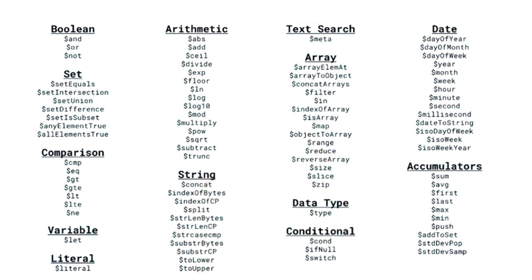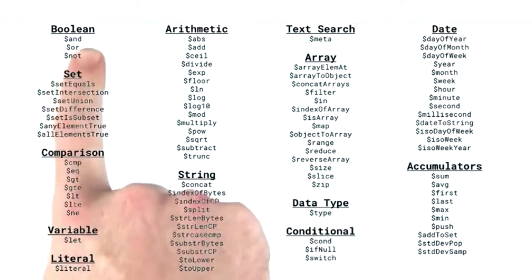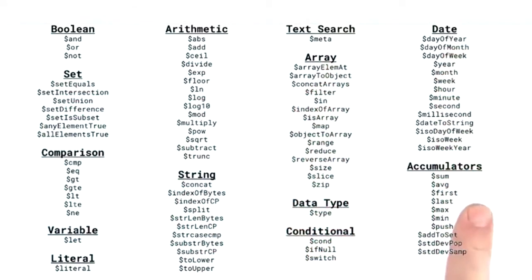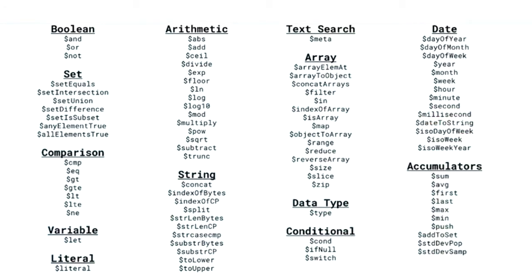Here are some expressions available to us: we can use Boolean, set, comparison, variable, literal, arithmetic, string, text search, array, data type, conditional, date, and accumulator expressions. There are a lot of expressions available, and while the names can be very descriptive, we're going to need details on how to use them. Additionally, some expressions can only be used in specific stages. We invite you to bookmark the aggregation pipeline quick reference page — the link is below this video.